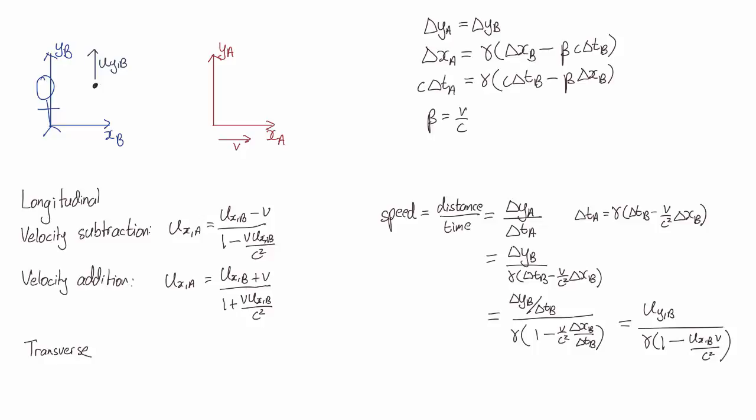And we also have a minus gamma UxB v on c squared, which is similar to our relativity of simultaneity term. Instead of a distance we have the velocity along the x direction of the rock.